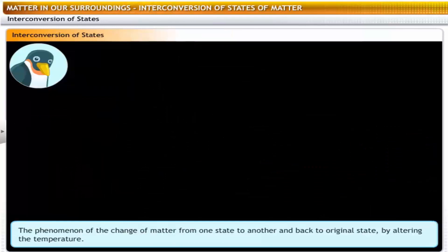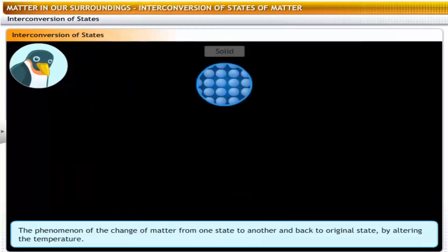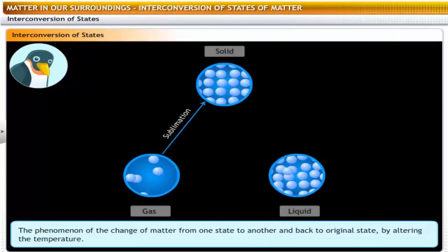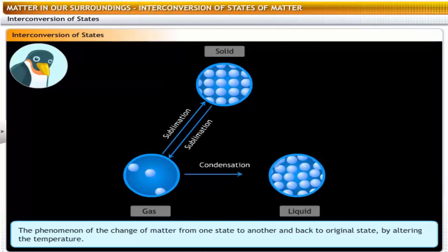To sum it up, the process where matter changes from one state to another and back to its original state by altering the temperature is interconversion of the states of matter.